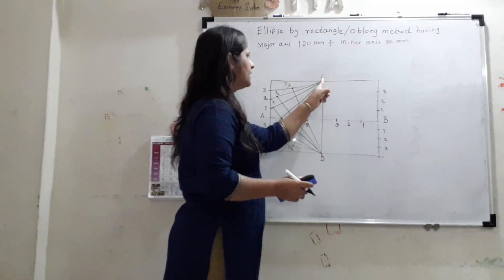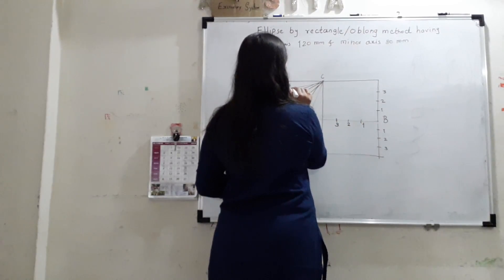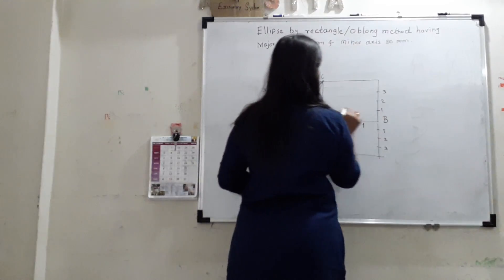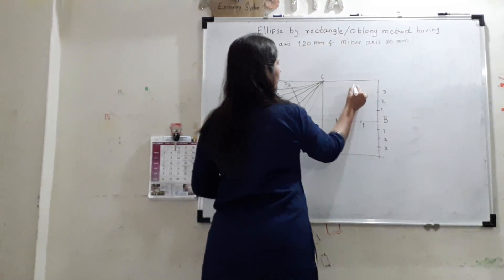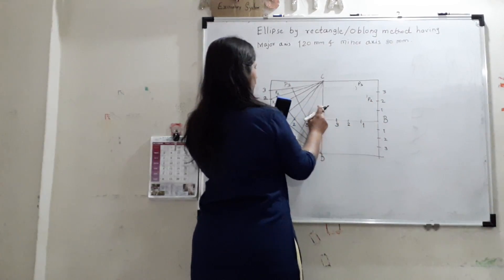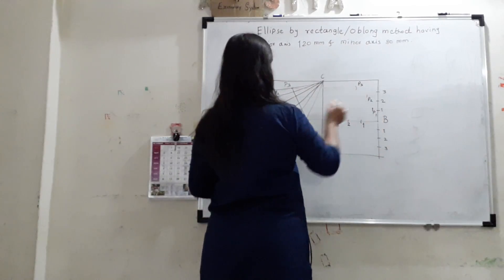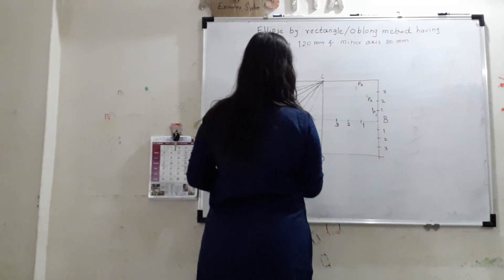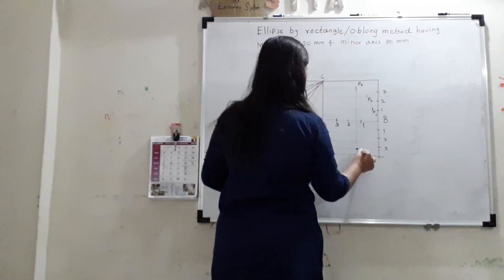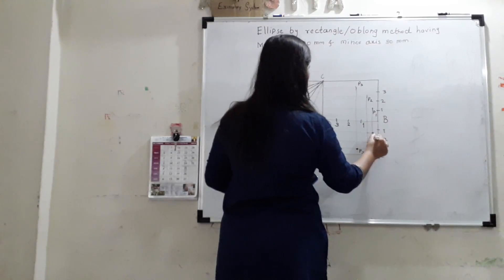You can repeat the same construction procedure. Like, C21 we can join. And D21 we can join. We will get P1, P2. Otherwise, you can have one more method. Like you can draw the horizontal line here. From P1, P2. And P3. So you will get P3 here. You can draw line here. So you will get P2 here. And you can draw one more line. So that you will get P1 also here. So number of ways are there.